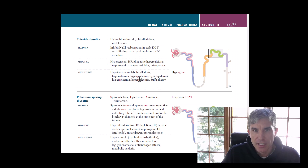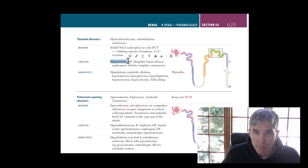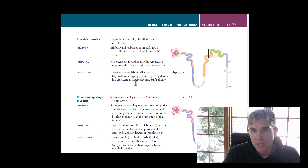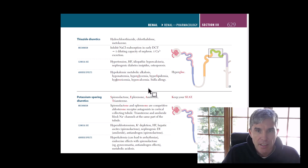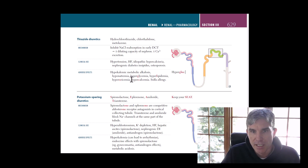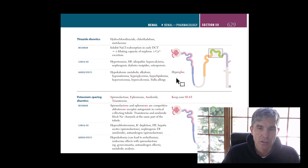The First Aid section on thiazide diuretics shows they work in the distal tubule and decrease calcium excretion, as we discussed, and are used for hypertension. It mentions they can be used for heart failure, but I don't think that's correct — they just don't produce enough urine output. The adverse effects listed include hypercalcemia, which makes sense since these drugs cause more calcium to go into the plasma. First Aid also mentions thiazides cause hyperglycemia, hyperlipidemia, and hyperuricemia — even giving the mnemonic 'hypergluc.' But what's not usually taught is that the same glucose, lipid, and uric acid effects can also occur with loop diuretics, just not the calcium effects.